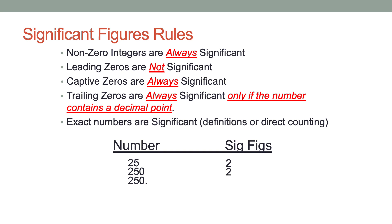What about 250 with a decimal point? Two and five are significant, and the trailing zero is now significant because there's a decimal place, so there are three significant figures.